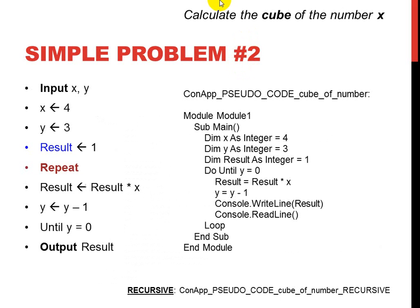Simple problem number two: calculate the cube of the number X. We have X, but we also need Y. Cube means multiplying three times, so Y is purely there to do something three times. We have our input section, our process, and part of the process is a repeat — so there's iteration involved.